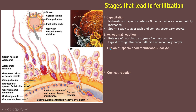This leads to the third stage, which is fusion of the sperm head membrane and oocyte membrane. Once the sperm passes through the zona pellucida, the sperm's membrane will fuse with the secondary oocyte membrane. This fusion will trigger cortical reaction and also trigger the secondary oocyte to continue meiosis II. At the end of this stage, the sperm's head will enter the secondary oocyte's cytoplasm.